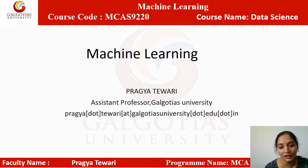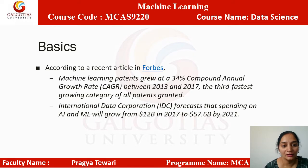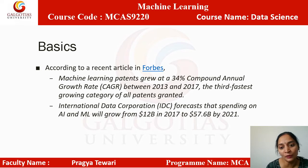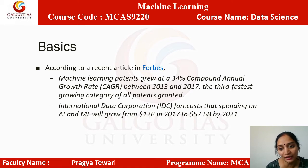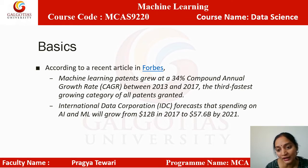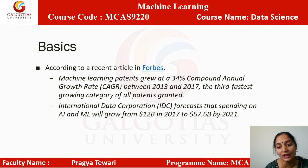Regarding machine learning basics — according to recent articles, machine learning patents grew at a 34% compound annual growth rate (CAGR) between 2013 and 2017, the third fastest growing category of all patents granted. International Data Corporation forecasts that spending on AI and ML will grow from 12 billion in 2017 to 57.6 billion by 2021.